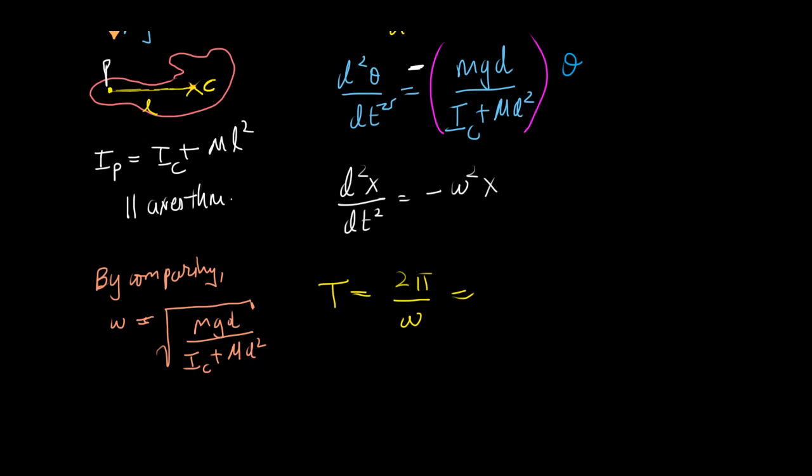And in my previous videos I have said that the time period is 2 pi by omega. So in this case, this will be 2 pi times the inverse of this, so it will be the square root.